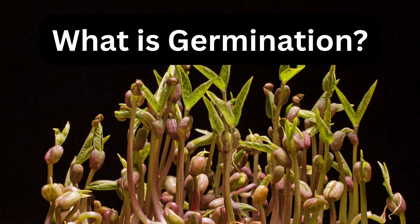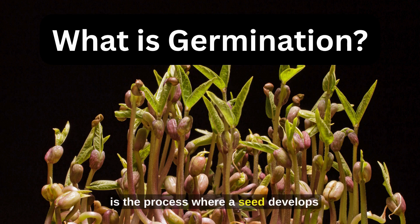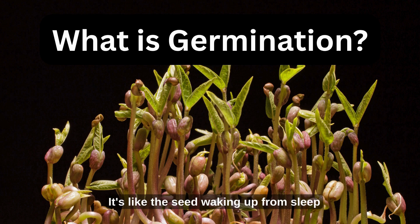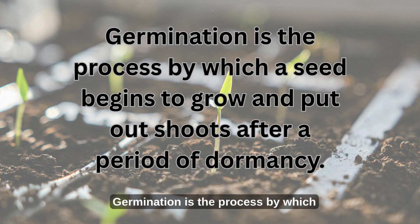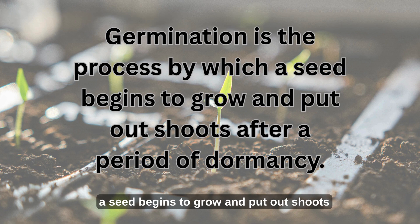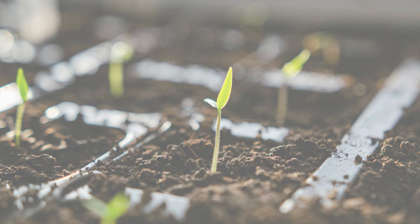What is germination? Seed germination is the process where a seed develops into a young plant or seedling. It's like the seed waking up from sleep when the right conditions are met. Here is a formal definition: germination is the process by which a seed begins to grow and put out shoots after a period of dormancy.